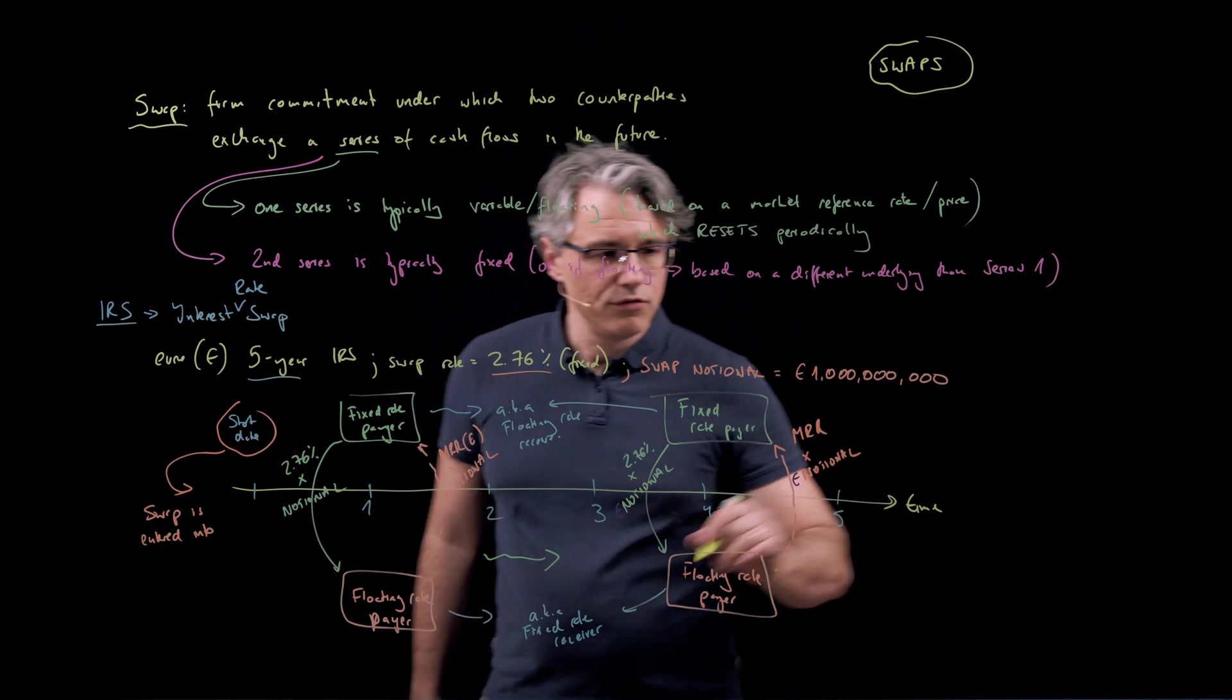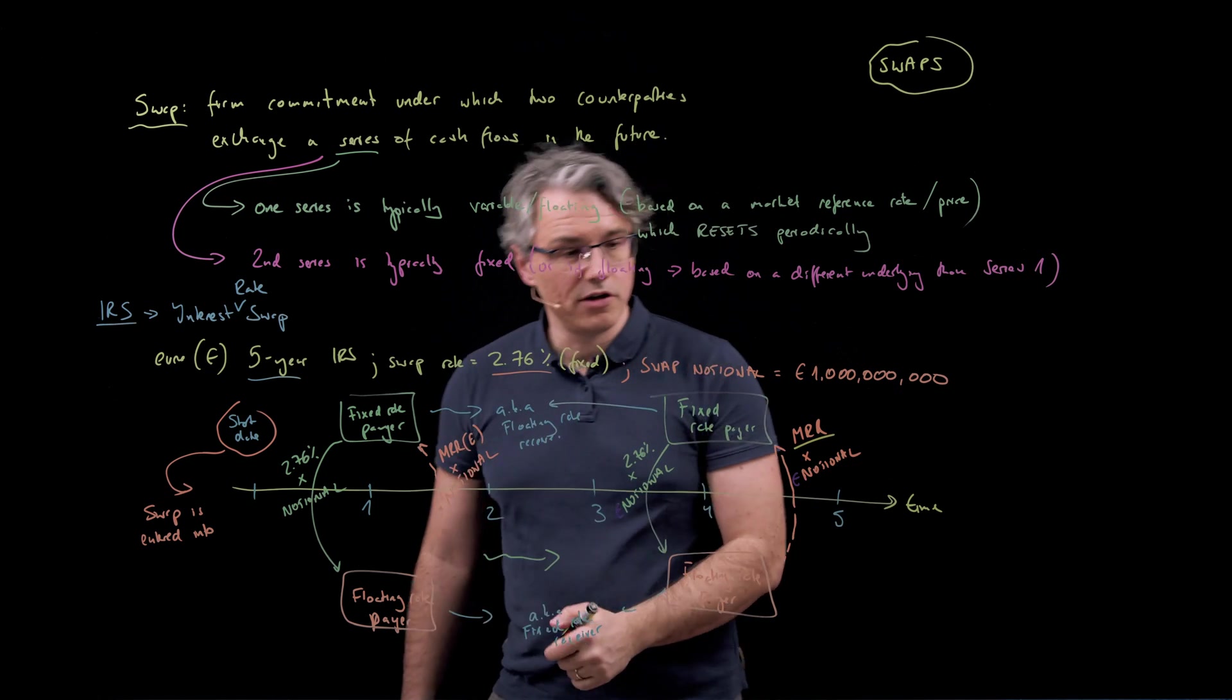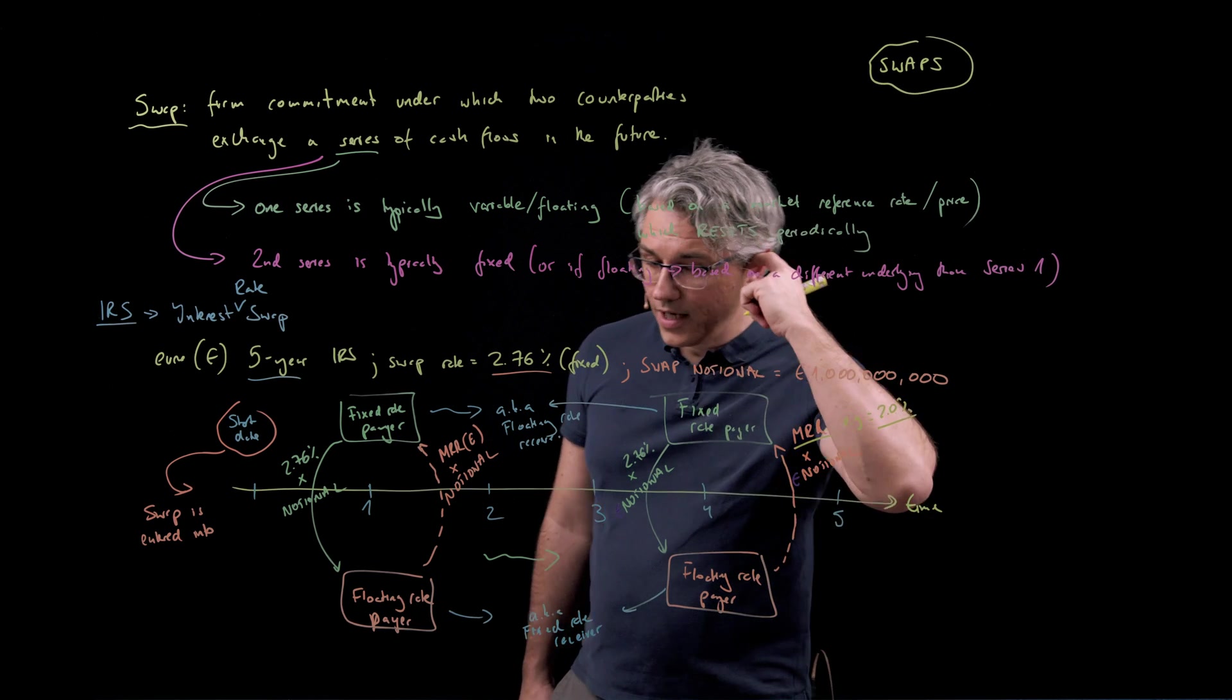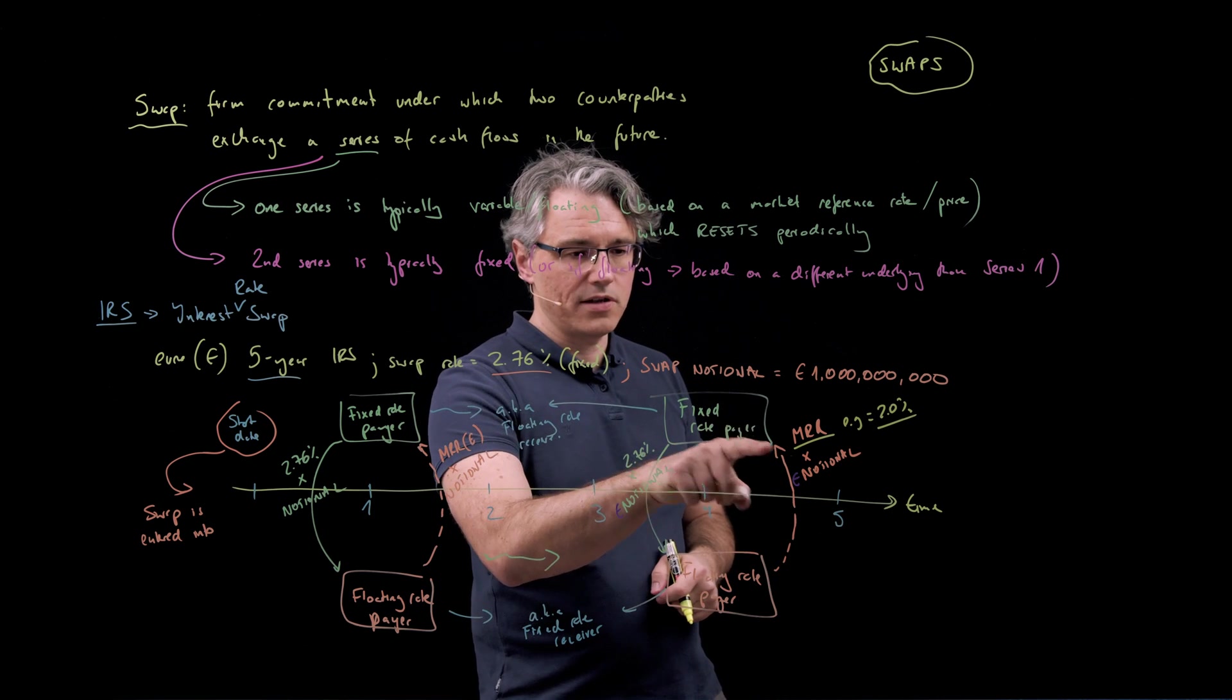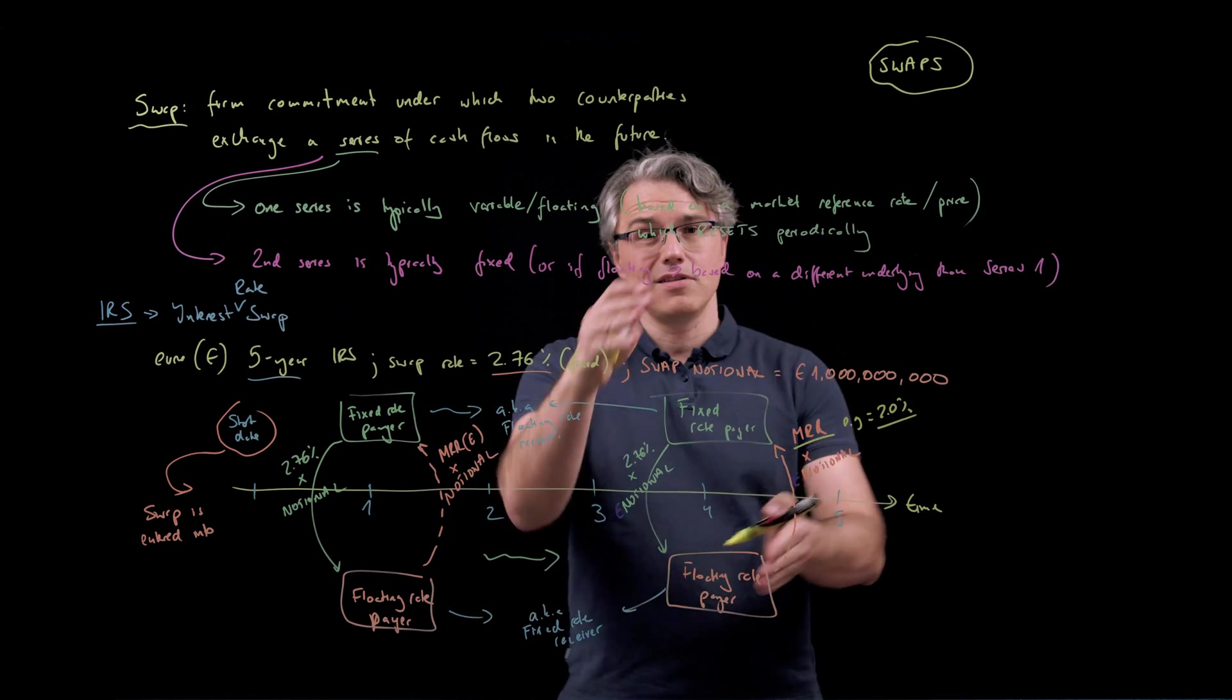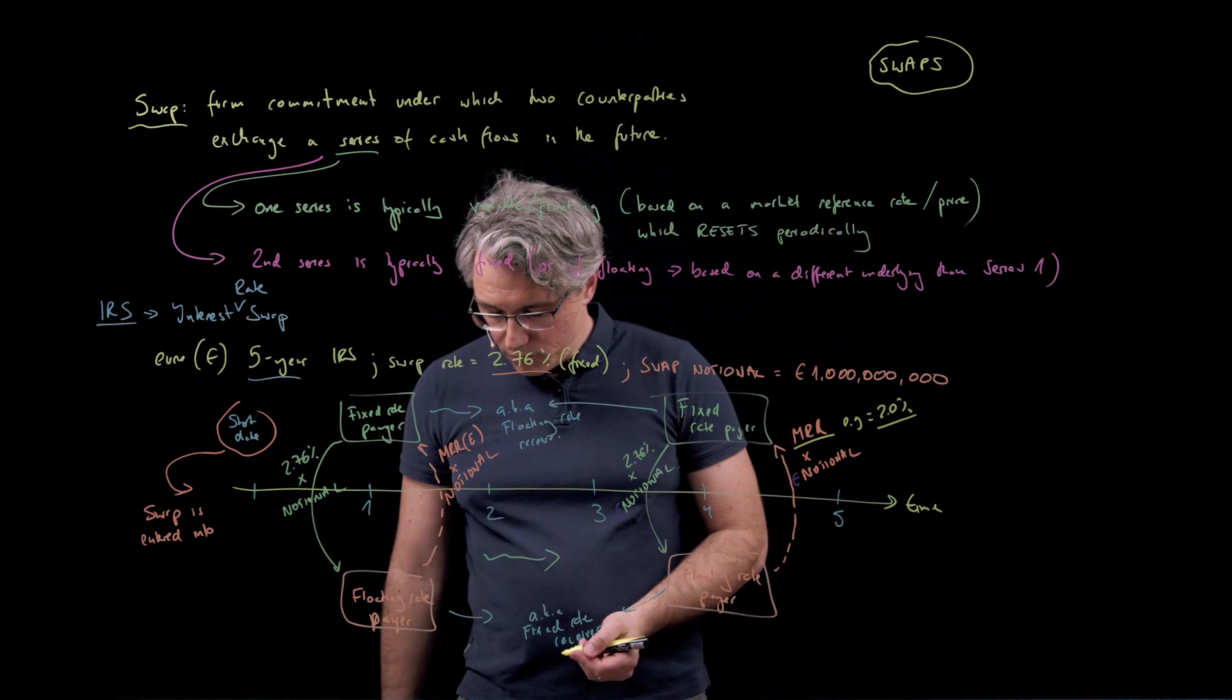So let's assume for example for just a moment that the market reference rate four years down the line after the swap initiation date is equal to 2%. So what happens is in theory the floating rate payer pays 2% times the notional and is supposed to receive 2.76% times the same notional. So instead of making payments going kind of both ways, why not just settle on a net basis which is what would happen.